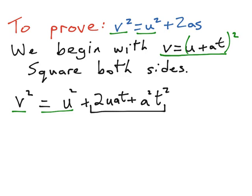We're going to factorize out the number 2 and the acceleration, which is the letter a. So on our next part, we'll still have v squared equals u squared, but now we're taking out the 2 and the a. So outside of a bracket, we have plus 2a.